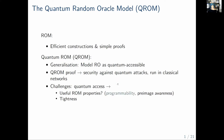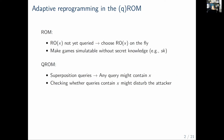Now we'll zoom in on one of those properties I just mentioned, namely programmability, and say a few words about adaptive reprogramming in the quantum random oracle model. In the classical random oracle model, things are very easy. We can say: if the random oracle has not been queried yet on a particular pre-image X, then the attacker has no knowledge of the value of this position, and we can choose it on the fly.